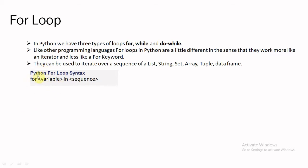In other programming languages when we are declaring the for loop, we always declare inside the function — between the round brackets we declare the variable value, then provide the condition, and finally the increment and decrement operator. But the sequence of declaration for a for loop in Python is different. Here we declare with 'for variable_name in sequence'. We will discuss this in detail with an example, cover the range function, the for loop example using range, and for loop with an else block.